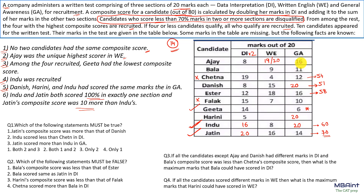For Ajay: 16 plus 16 equals 32. If DI is 19, composite would be 51 — but that's not possible since no two candidates share the same composite score. So Ajay's DI must be 20, giving a composite score of 52.